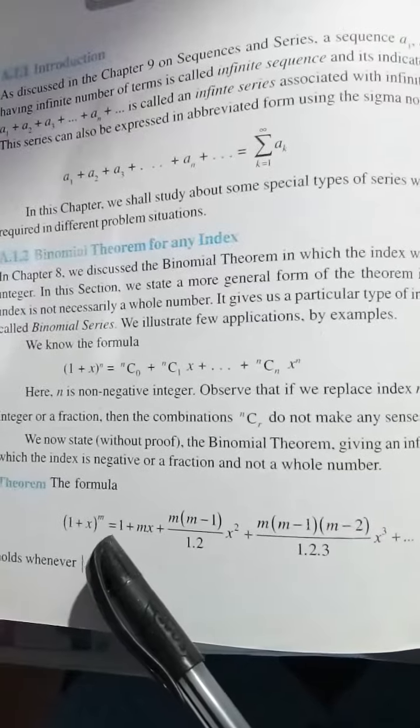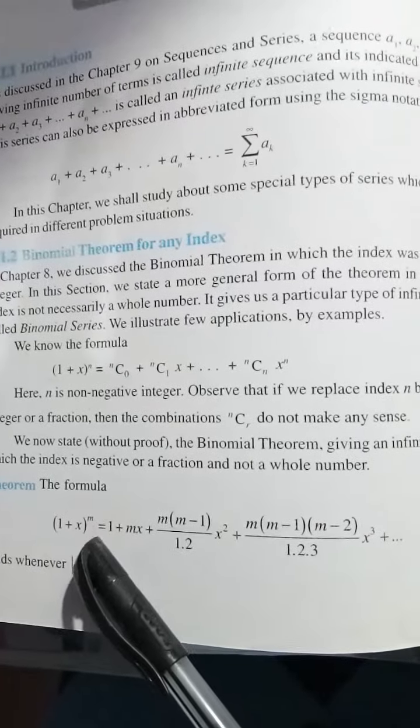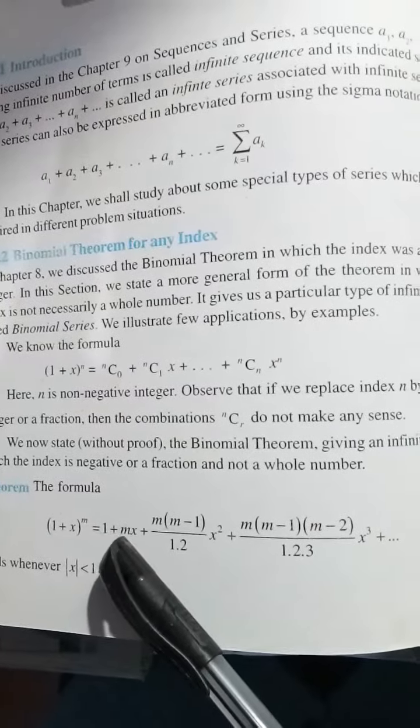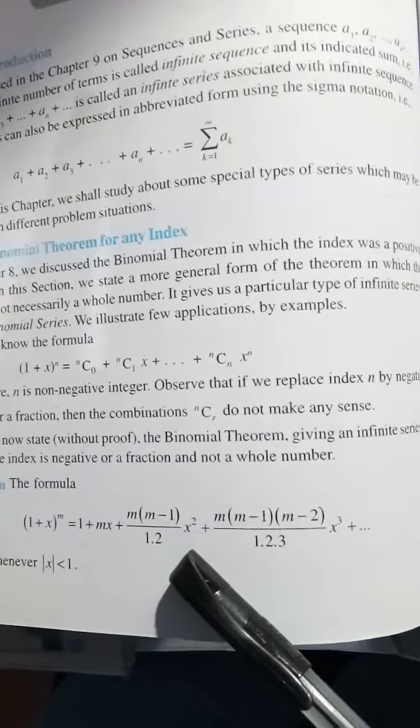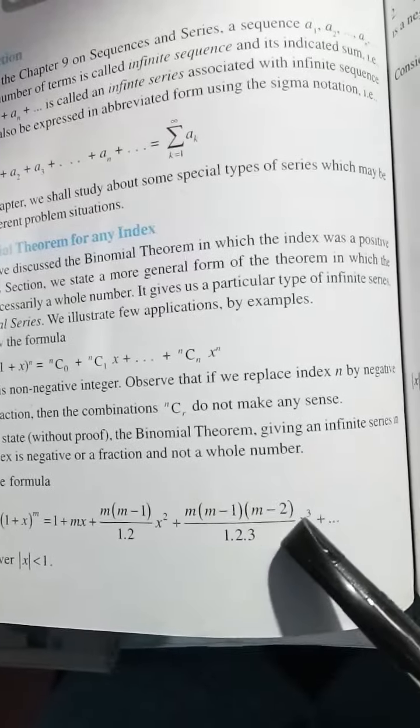The theorem: The formula (1 + x)^m is equal to 1 + mx + m(m-1)/1.2 * x^2 + m(m-1)(m-2)/1.2.3 * x^3 + ...